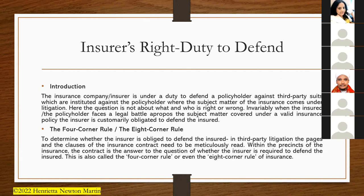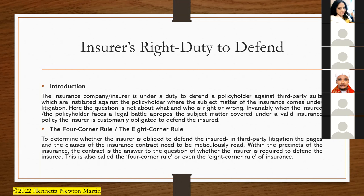To determine whether the insurer is obliged to defend the insured in third-party litigation, we have the four corner rule, sometimes also called the eight corner rule. Under this rule, the pages and clauses of the insurance contract must be meticulously read. Within the ambit of the insurance contract lies the answer to whether the insurance company is required to defend the insured — this is the four corner or eight corner rule of insurance.